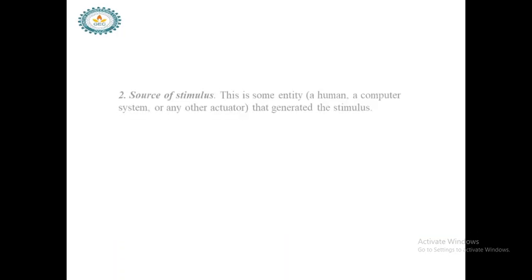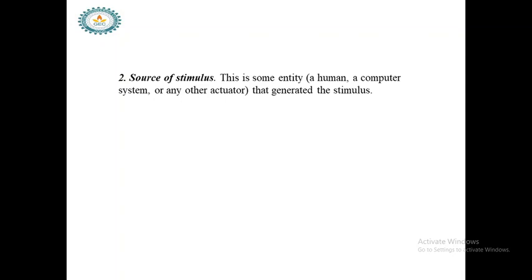The source of stimulus may be a human, a computer, a system, or some other actuator. The person or machine that initiates the action is called the source of stimulus. For example, at an ATM, the user or customer initiates the transaction, so the customer is the source of stimulus.